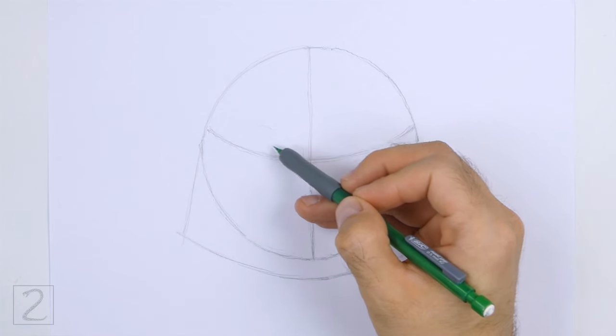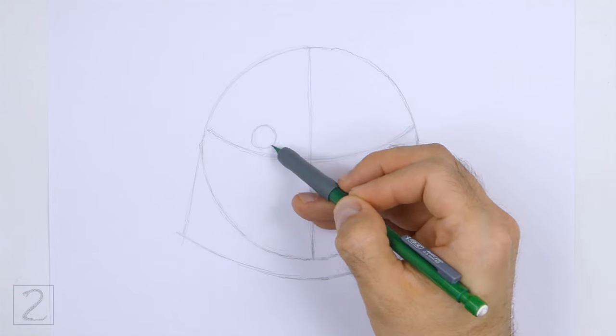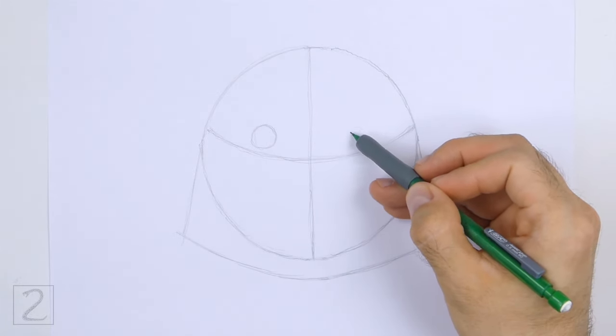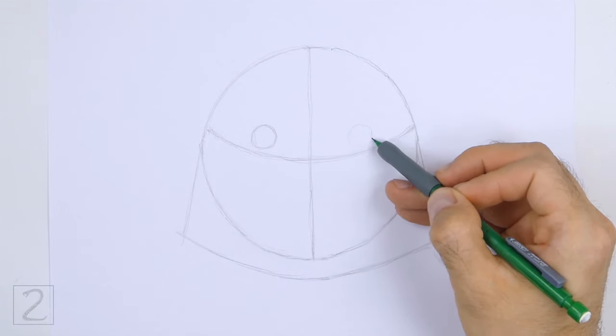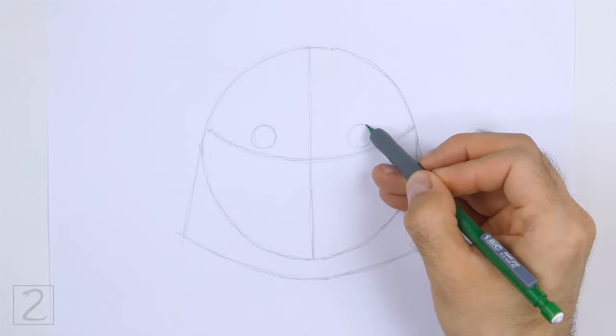On top of the horizontal construction guide, draw two small circles as guides for the eyes. Place the eyes on either side of the vertical construction guide. Pay attention to the sizes of the eyes in relation to the head.